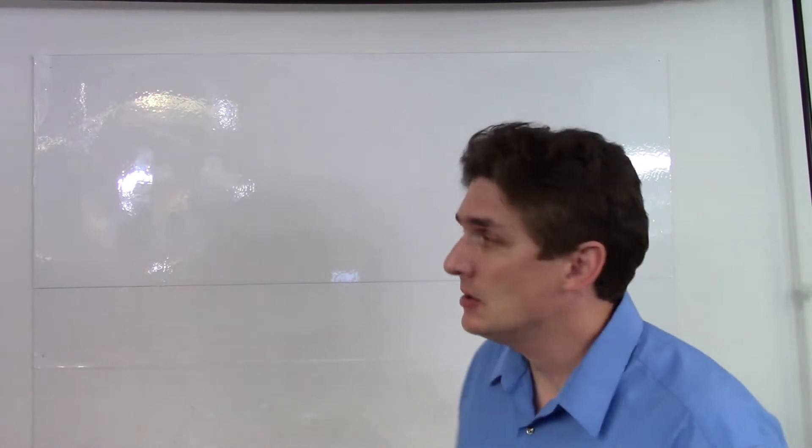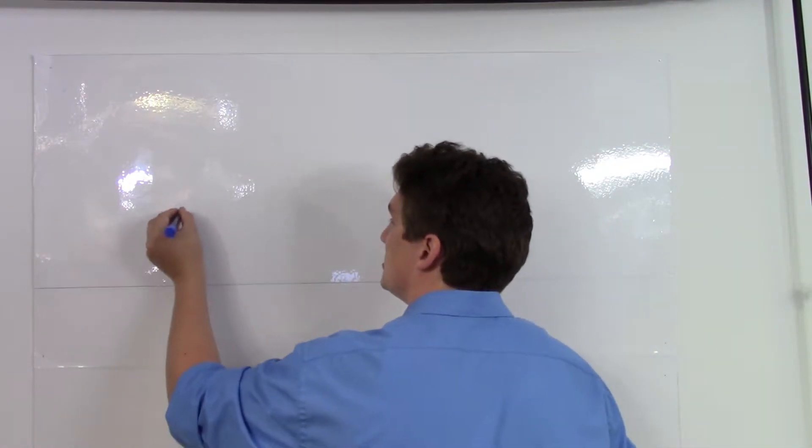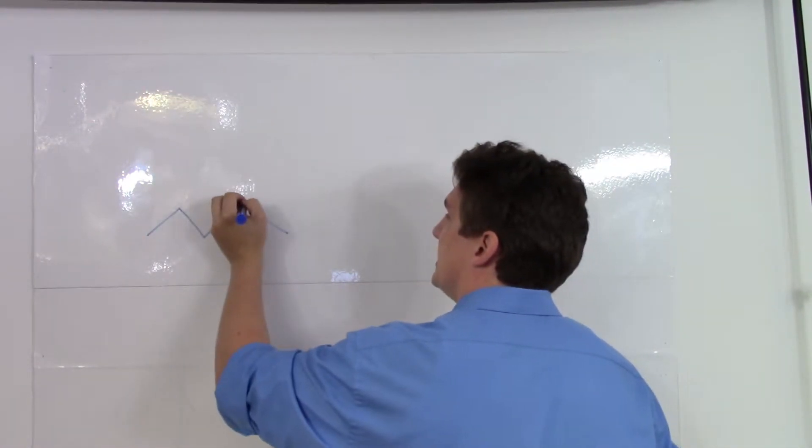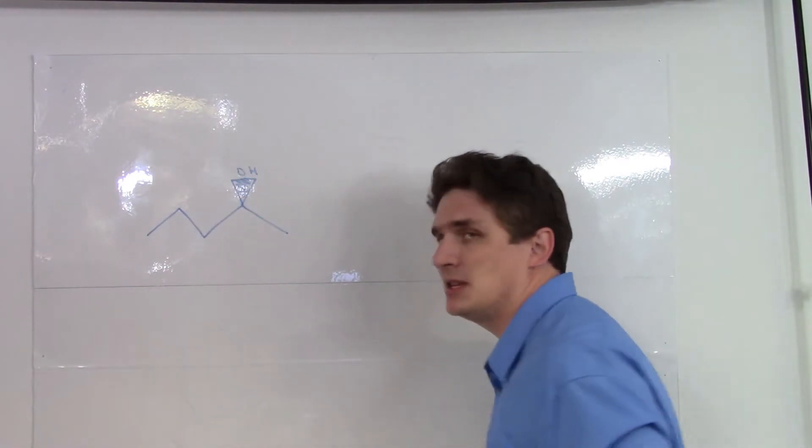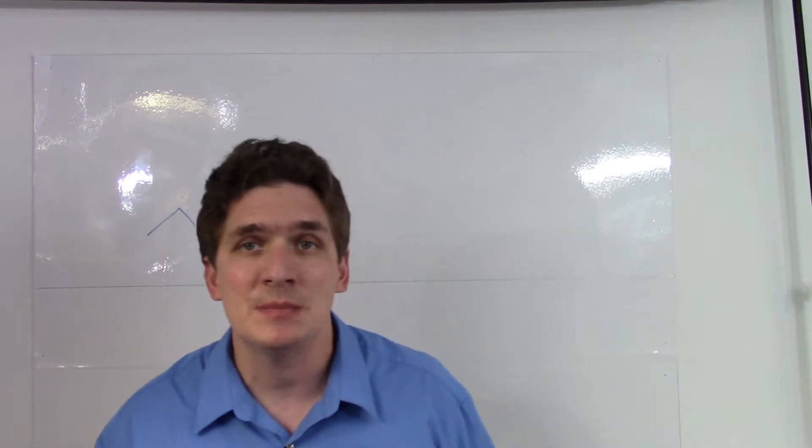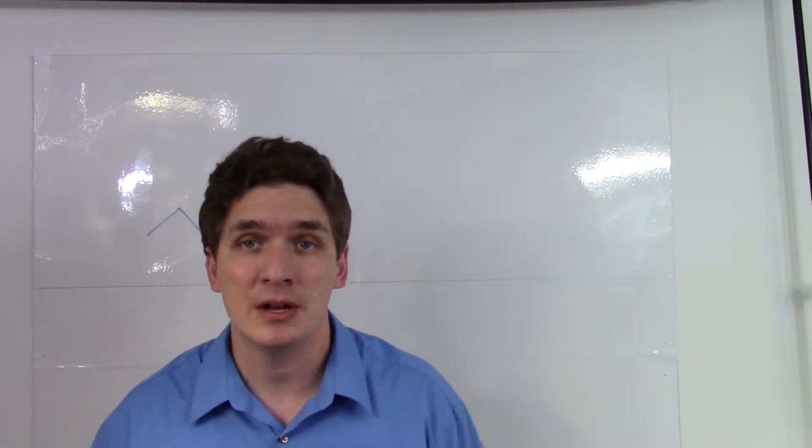We've talked about thionyl chloride SOCl2 as a way to replace alcohols and to do so stereospecifically, and this is a nice reaction for two reasons. First of all, it is stereospecific. We don't get a racemic mixture when we're done. We get an enantiomerically pure product.